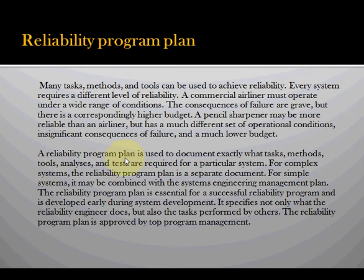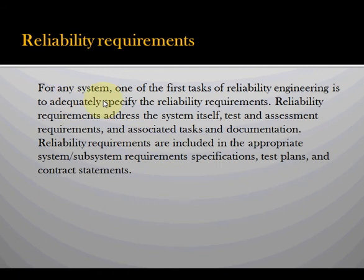A reliability program plan is used to document exactly what tasks, methods, tools, and analysis and tests are required for a particular system. For complex systems, a reliability program is a separate document. For simple systems, it may be combined with the systems engineering management plan. For any system, one or more reliability metrics are adequate to a specified requirement.